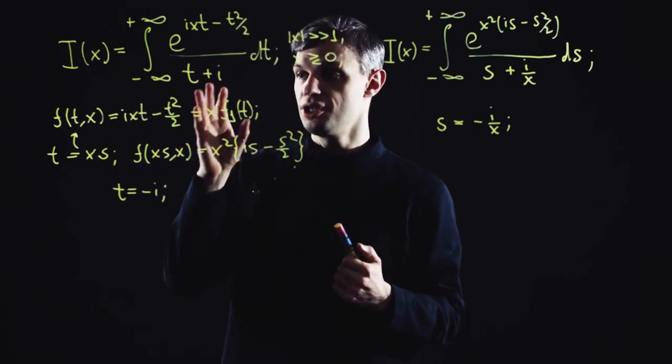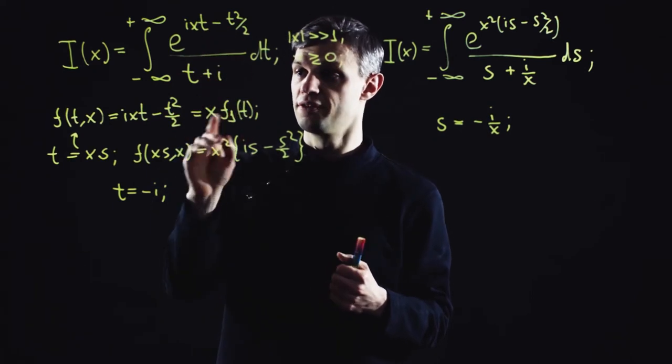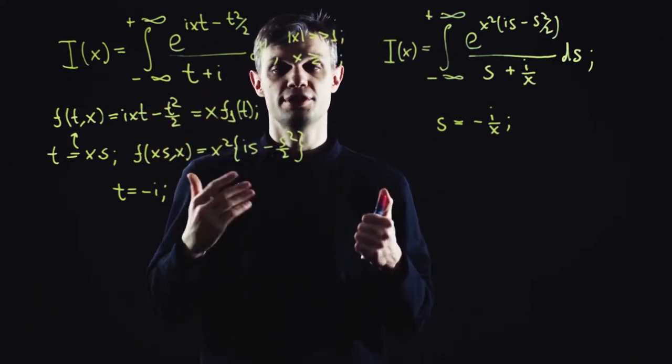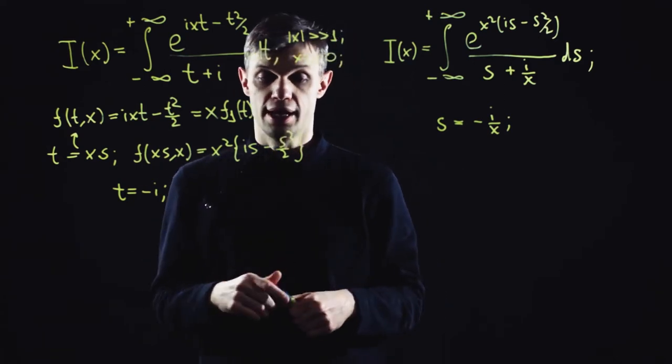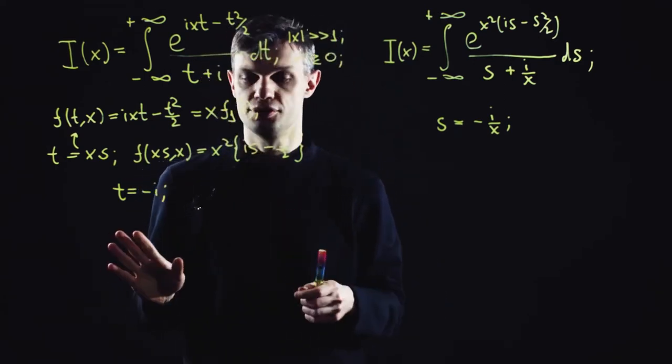The point, however, is that this requirement of the homogeneity of the exponent function with respect to large parameter is mostly redundant in the steepest descent method and can be safely avoided altogether.